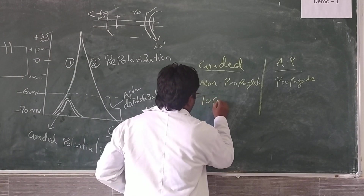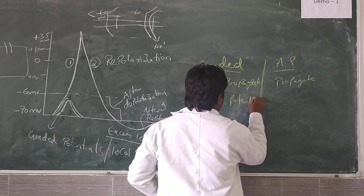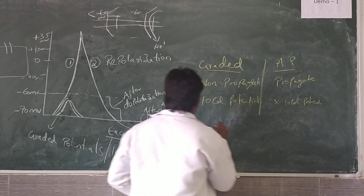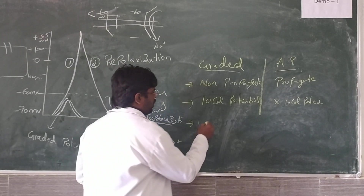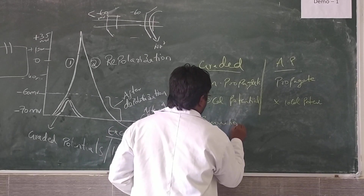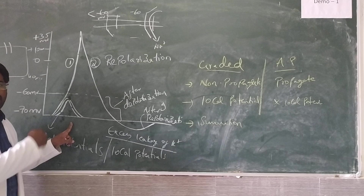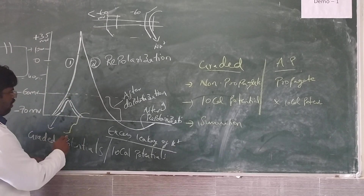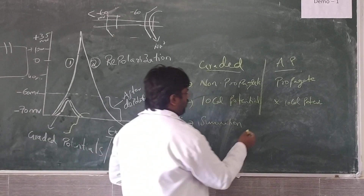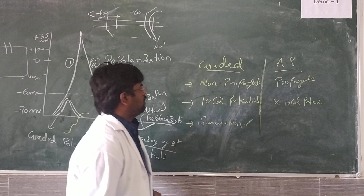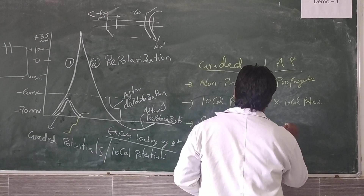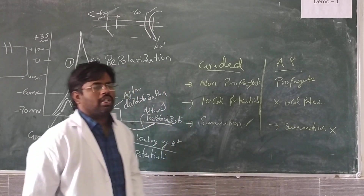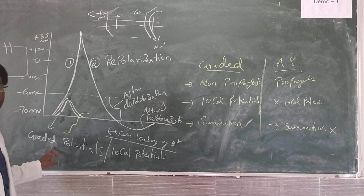Graded potentials are local potentials. These are not propagating potentials. Summation is possible in graded potentials — the initial stimulus will add on to the next stimulus. If we give the next stimulus immediately, it will add on; this we call summation. The phenomenon of summation is possible in graded potentials, and summation is not possible in action potential.